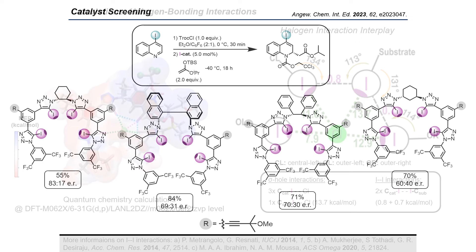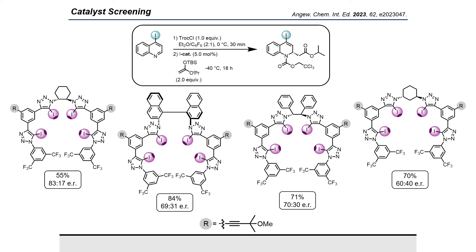So further we screened different halogen bond catalysts with different chiral backbones. We introduced a 1,3-distance, a 1,2-diphenylethane, and a BINAP-based chiral backbone. But none of these catalysts could increase the enantiomeric ratio compared to the 1,2 backbone.